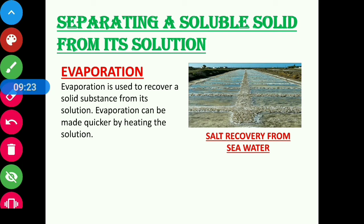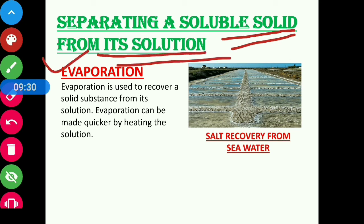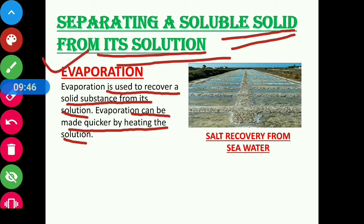Next, we will discuss separating a soluble solid from its solution. The first method is evaporation. Evaporation is used to recover a solid substance from its solution. For example, salt recovery from sea water uses evaporation. Salt is a solid which is completely soluble in water, so to get back this solid we use evaporation. Evaporation can be made quicker by heating the solution.